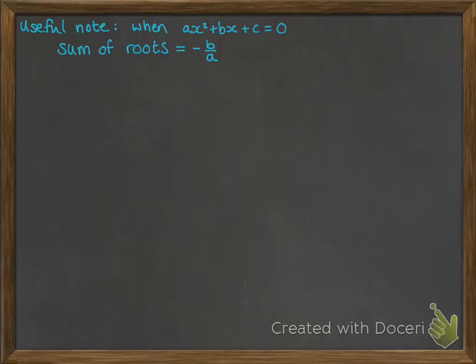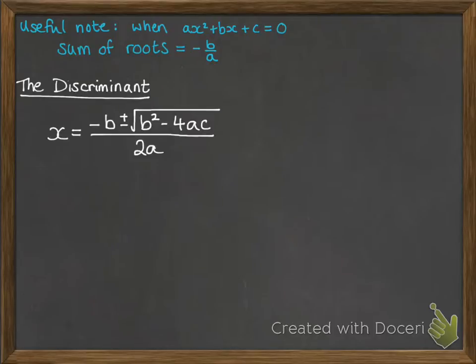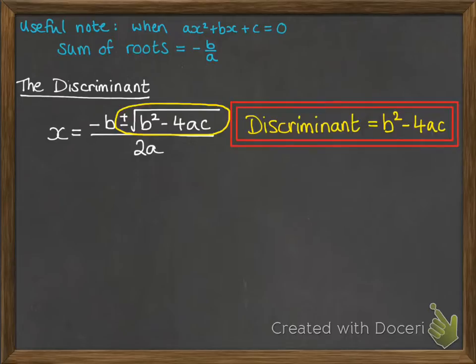Now we'll look at the discriminant. Remember your quadratic formula. The part that changes the answer is that bit just there, which gives you your two separate answers. The minus b and the 2a at the bottom don't change, but that bit I've circled does because you can either add it on or subtract it. That bit is referred to as the discriminant, or more particularly, the b squared minus 4ac part is the discriminant.